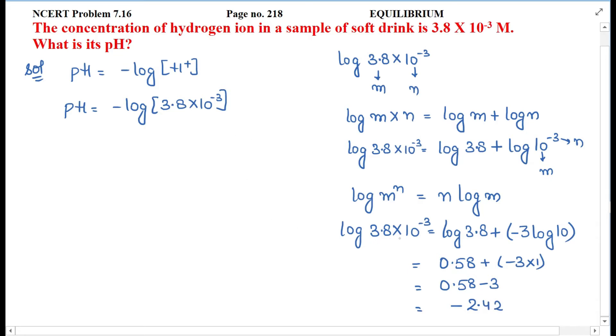Now this log 3.8 × 10^-3 value we calculated, put it here as minus 2.42. So minus into minus gives plus 2.42.